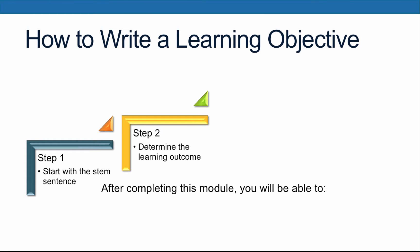Next, determine the learning outcome. Think about what it is that you want the students to be able to do, and then think about how you will know that they understand what you've taught them. What is the outcome or product that they will do or produce that demonstrates they've mastered the concept? When designing this video, I identified that I wanted the participants to know the six levels of Bloom's Taxonomy. I then asked myself: how will I be able to determine that the learners understand Bloom's Taxonomy? What can they do to demonstrate that they've mastered this concept?